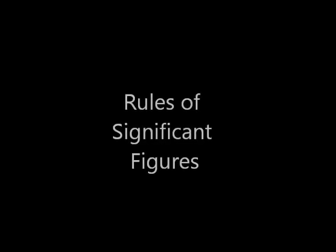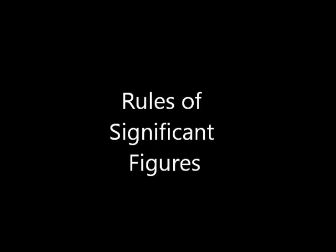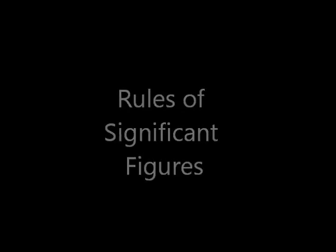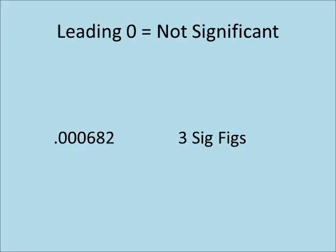But how do we know which numbers are significant? Well, Sally, the rules for significant figures are: leading zeros are never significant, as in the number 0.000682 — the first three zeros are not counted, and the last three digits are the significant digits.